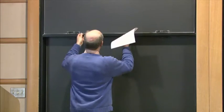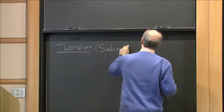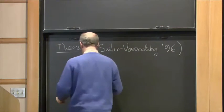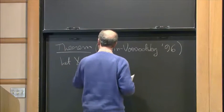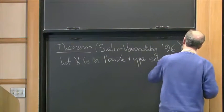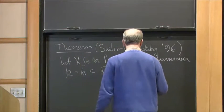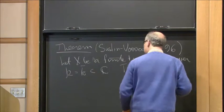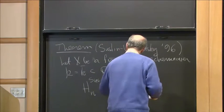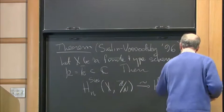Let me mention this theorem of Suslin and Voevodsky. The paper appeared in 1996. Let X be a finite type scheme over a field K which is algebraically closed and contained in the complex numbers.